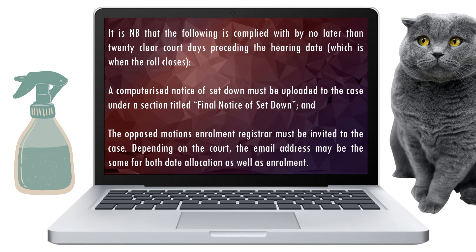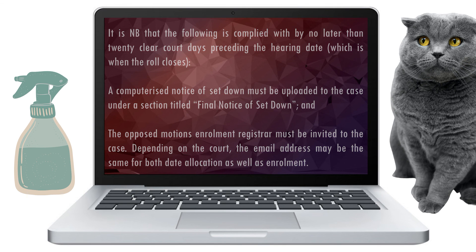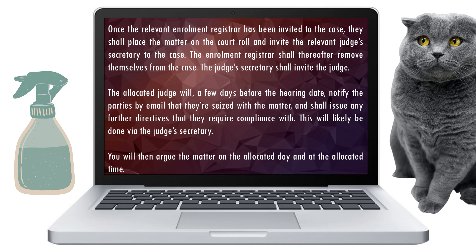Once the above has been attended to, you can relax for a bit until closer to the allocated date. It is however imperative that the following is complied with by no later than 20 clear court days preceding the hearing date, which is when the role closes: a computerized notice of set down must be uploaded to the case under a section titled 'Final Notice of Set Down,' and the opposed motions enrollment registrar must be invited to the case. Once the relevant enrollment registrar has been invited, they shall place the matter on the court role and invite the relevant judge's secretary to the case. The judge's secretary shall invite the judge, who will notify the parties by email a few days before the hearing date that they are seized with the matter and shall issue any further directives. You will then argue the matter on the allocated day and at the allocated time.